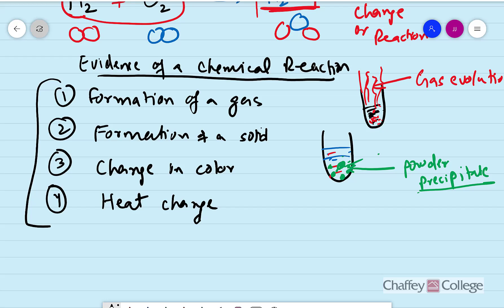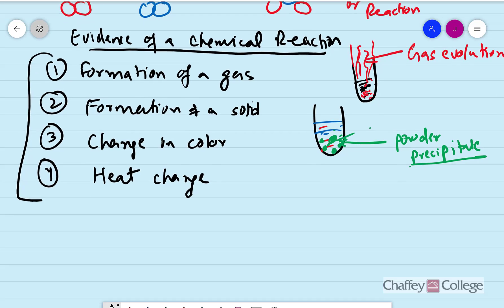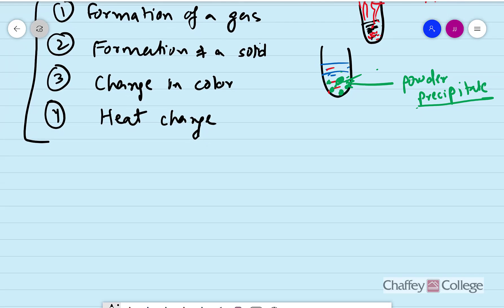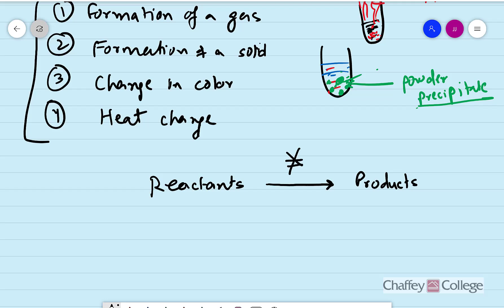Once we know that a chemical reaction has occurred, we express that reaction in the form of an equation. The equation is written such that reactants are on the left-hand side, products are on the right-hand side, and in the middle there is an arrow — not an equal sign, because reactants are not equal to products; reactants are giving us the product.